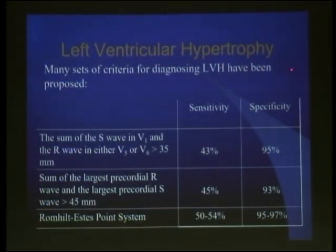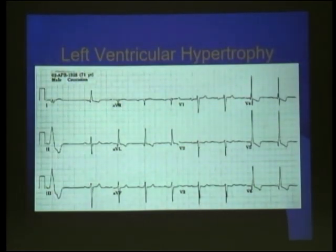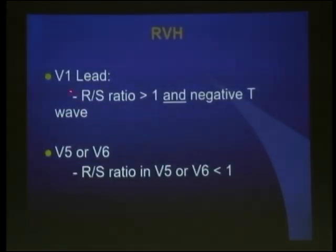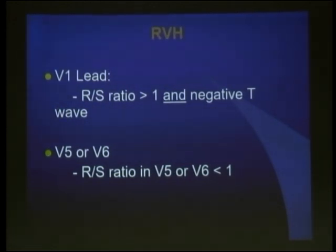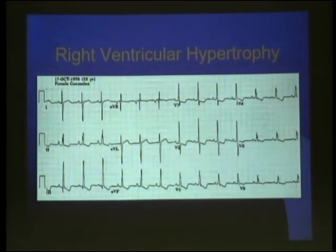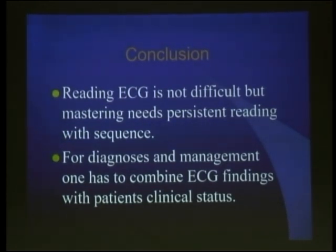Left ventricular hypertrophy — you all know: S wave in V1 plus R wave in V5 or V6. There are other criteria as well, but if you remember one, that is enough. For right ventricular hypertrophy: R to S ratio in V1 — if R is more than S in V1, this is RVH. Also, if in V5 or V6 the R is smaller than S — S bigger than R in V6 — this can also indicate RVH. These two criteria are the most important.